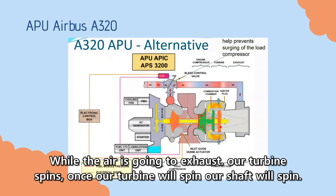While the air is going to the exhaust section, our turbine spins. So once our turbine spins, our shaft also will spin.